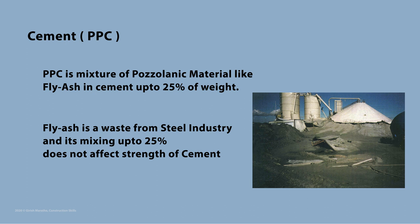Hence, Portland Pozzolanic Cement becomes more economical. The fly ash used is a waste product from the steel industry, which is an environmental hazard, and replacing clinker with up to 25 percent fly ash by weight does not cause any loss of strength of the cement.